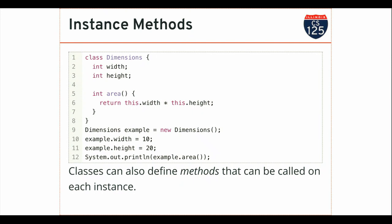The last thing we're going to talk about today is the idea of an instance method. Up until this point, we've been largely concerned with the data an object can store. But objects can also do things — that's one of the things that's fun about them. Instance methods are part of the class declaration, so every object of that class can perform certain actions and implement certain behaviors.